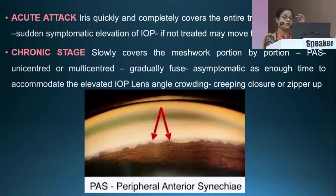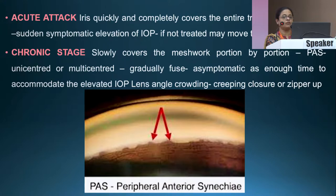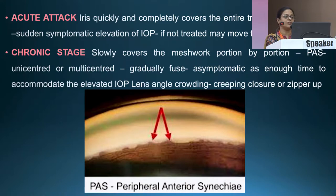A patient may present either in an acute or chronic stage. In the acute stage, it is easier to identify, as the patient has symptoms along with elevated IOP due to quick and complete obstruction of the trabecular meshwork. In the chronic stage, symptoms are much lesser as the meshwork closes slowly with PAS formation that may be unicentric or multicentric. As the patient accommodates to elevated IOP, they present with fewer symptoms, and we can see zippering up of the angle.